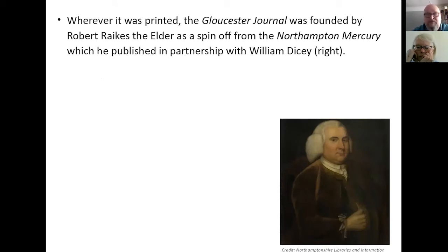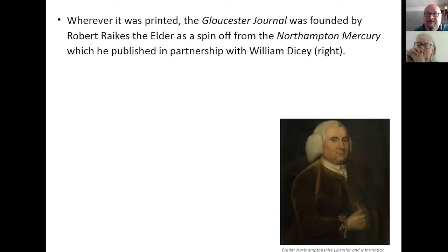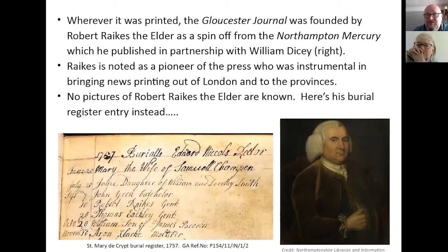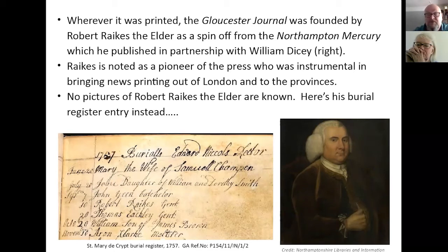It was founded by Robert Raikes — that was a spin-off partnership from the Northampton Mercury, where Raikes was already in partnership with a chap called William Dicey. Raikes is noted as a pioneer of the press, instrumental in bringing news out of London into the provinces, starting in Northampton but then spreading around.